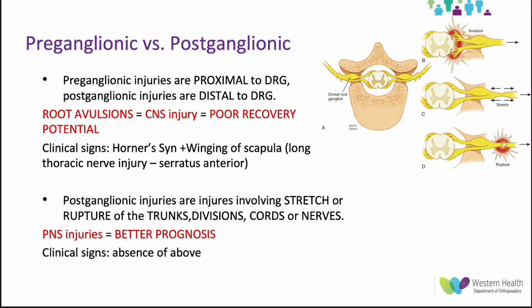Clinical signs of a preganglionic injury include Horner's syndrome — ptosis, miosis and anhidrosis — and winging of the scapula due to long thoracic nerve injury affecting serratus anterior. Postganglionic injuries, as mentioned before, are injuries involving a stretch or rupture of the trunks, divisions, cords or nerves. They are peripheral nervous system injuries, so they have a better recovery potential and a better prognosis. If you do not find clinical findings of Horner's syndrome or winging of the scapula, you most likely have a postganglionic brachial plexus injury.